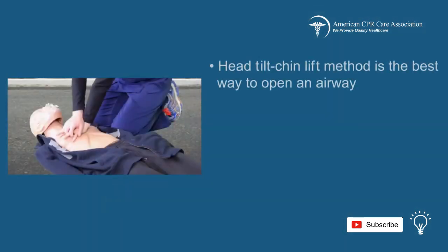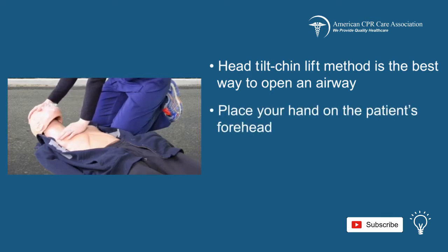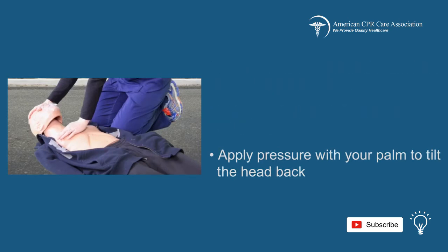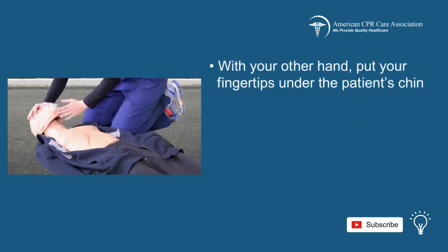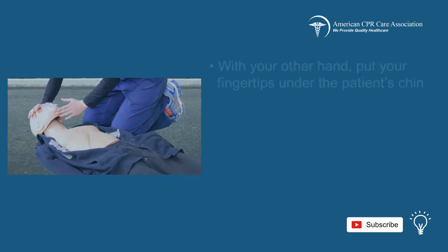The best way to open the airway is by the head tilt chin lift method. To perform this, place your hand on the patient's forehead then apply pressure with your palm, which will tilt the head back. With your other hand, put your fingertips under the patient's chin, lifting with your fingertips until the mouth is open.